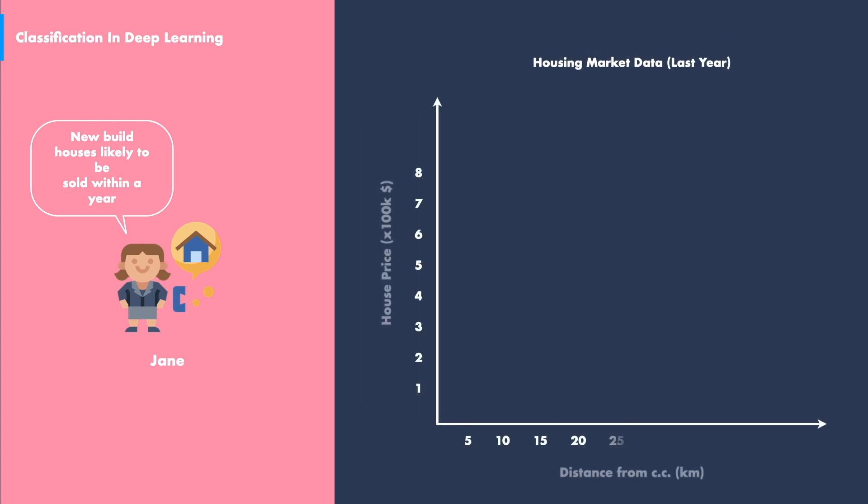So what does Jane do? She draws the data from the previous table of last year, showing the newly built houses. She plots the data using the house prices for one axis and the distance from the city center for the other axis. Then she labels the sold and unsold houses with blue and red dots respectively.